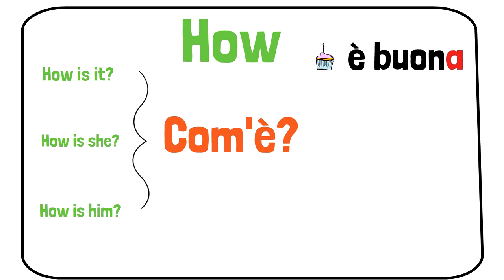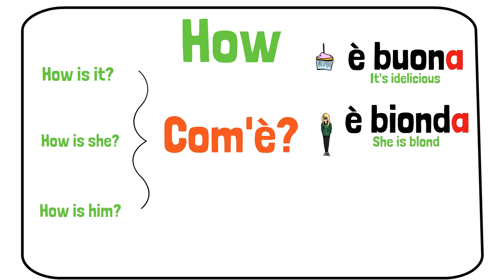In Italian we ask Come? How is the cake? Com'è? It's delicious. È buono. How is he? He is bitter. How is she? She is blonde. È bionda. How is he? He is black. È nero. He is brown.